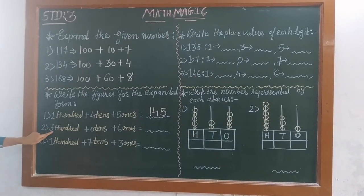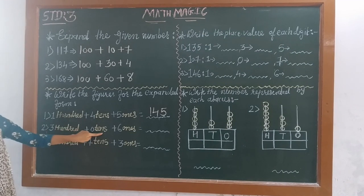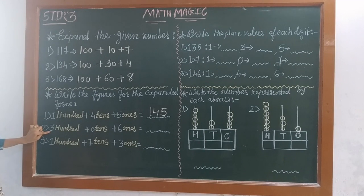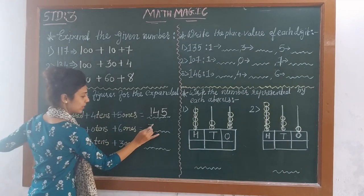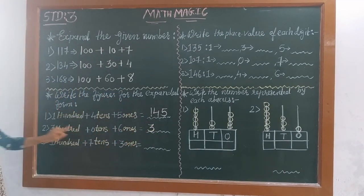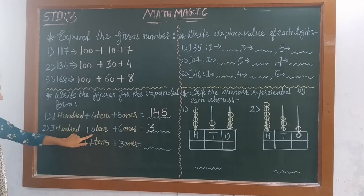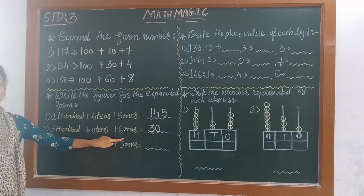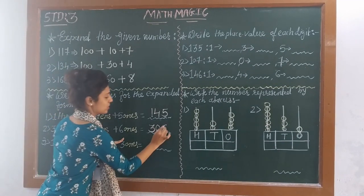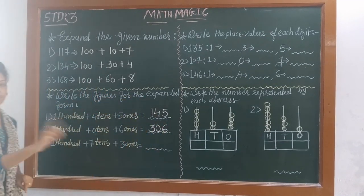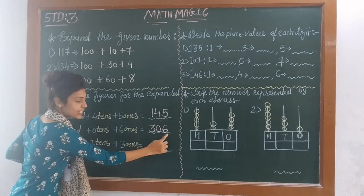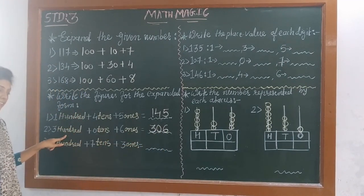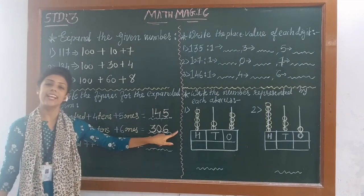Next number: 3 hundreds, 0 tens, 6 ones. So we will start from 300. At 100's place we write 3. At 10's place we write 0. And how many ones are there? 6 — so we write 6 at 1's place. Once again we check: 6 ones, 0 tens, and 3 hundreds. So the number is 306.